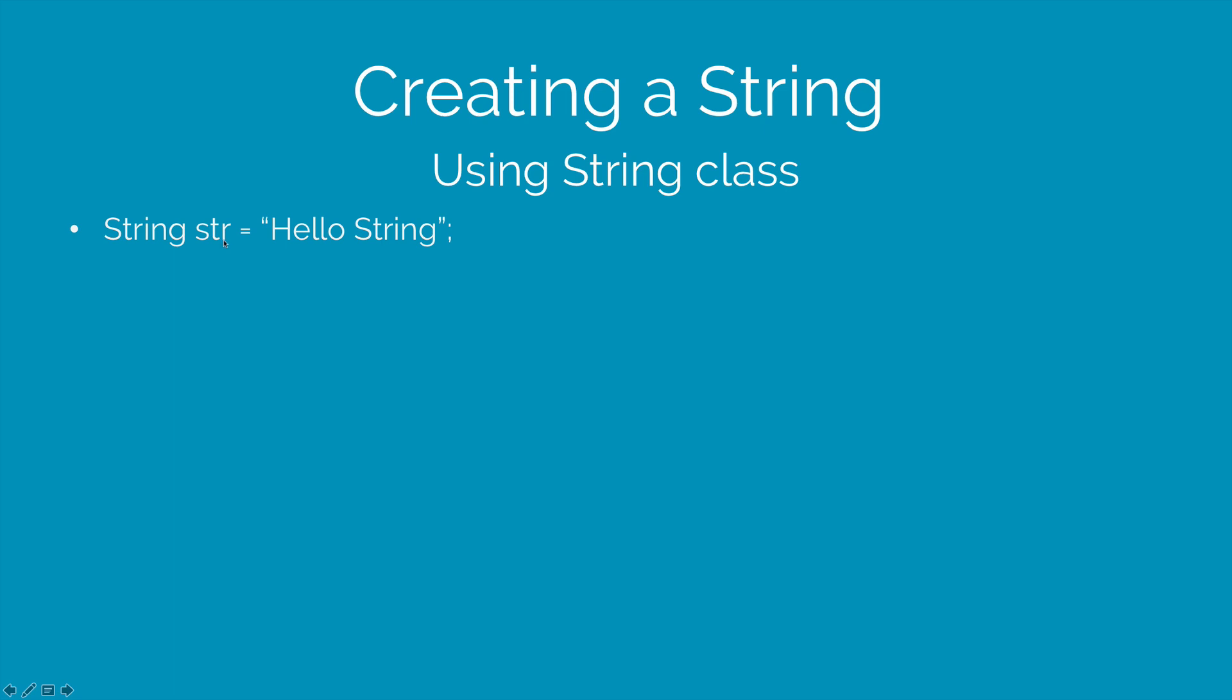While creating this string, str points to the text hello string. But what if I don't want any valid value? In that case, I can assign the value to null. Null is a special value which means several things. It means that there is no value, it means there is no object, it is unknown, it is unavailable.